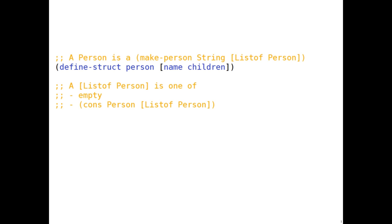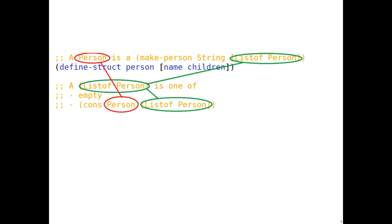Let's start with an example. Let's say we have a person structure that has a string and a list of person, representing the name and the children that this person has. And a list of person, which is one of empty or cons person list of person. Notice how the person structure refers to the recursive list of person definition, and the list of person definition refers to both itself and the person structure.